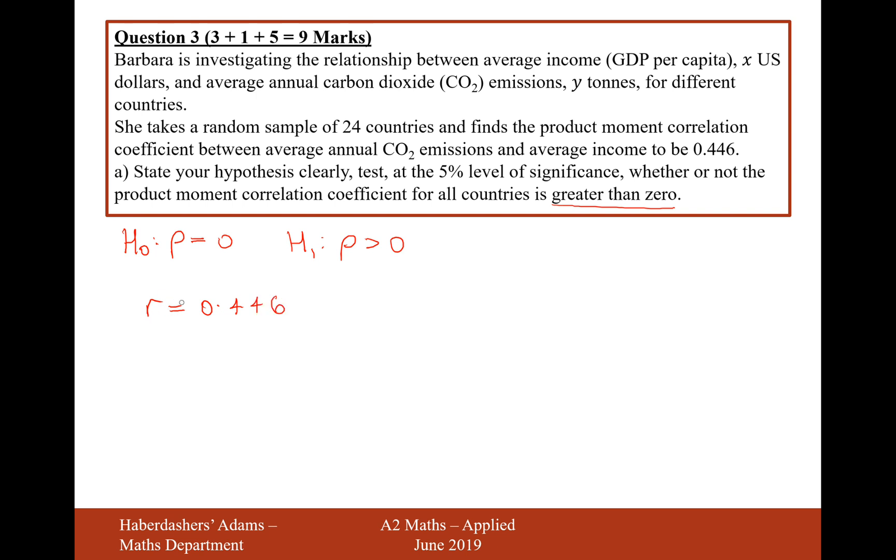Now R is the product moment correlation coefficient of these 24 countries, but rho is representing the product moment correlation coefficient between all countries. This is just a sample PMCC, this is a population PMCC. That's why we use different letters there, but effectively they're the same letter, just rho is R in Greek and this is English R.